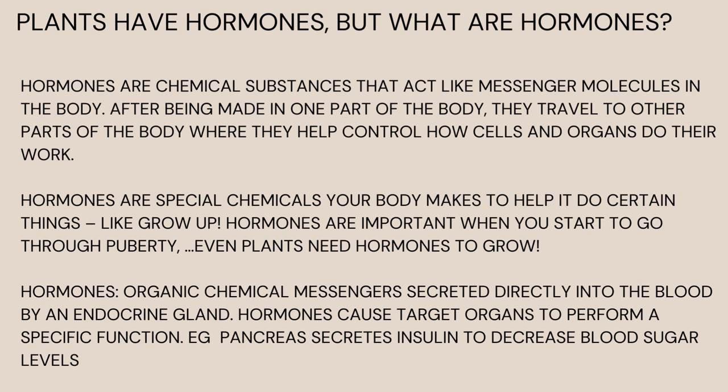Hormones are secreted by an endocrine gland and cause target organs to perform a specific function — for example, the pancreas secretes insulin to decrease blood sugar levels. In animals, hormones are produced at a special site, but in plants hormones are not necessarily produced in specialized tissue. The time taken by plants to react to a hormone concentration is much longer than in animals. Plant hormones are not true hormones since they bring about a response only in the region of the plant where they are produced.